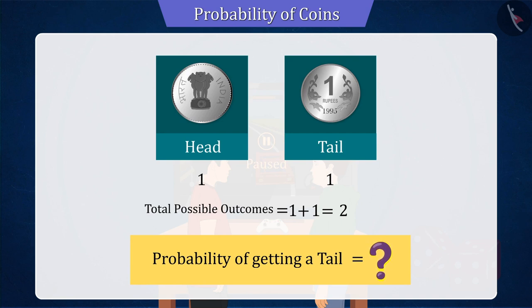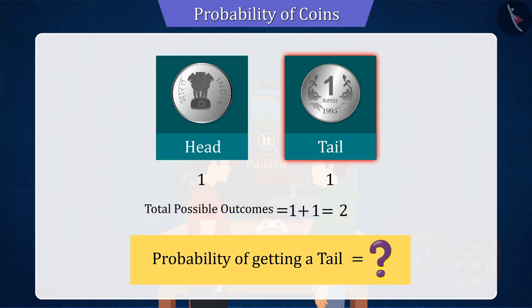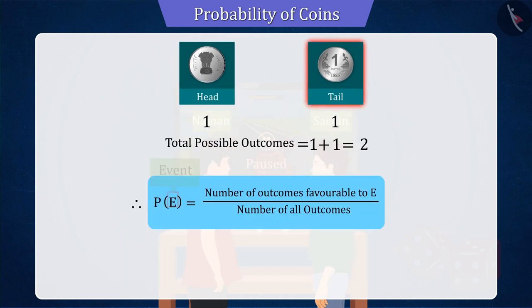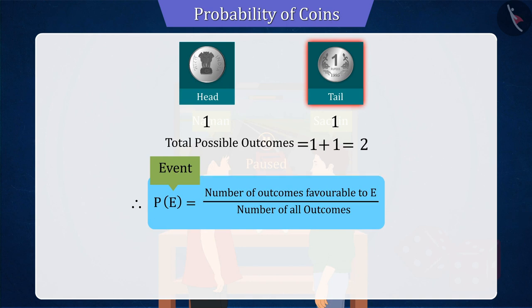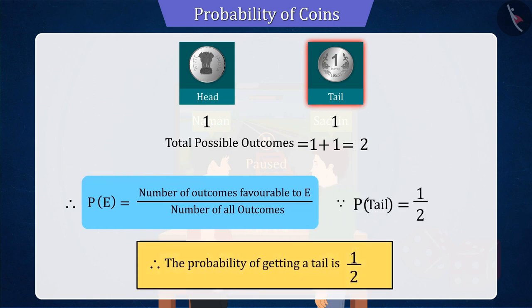As we know that tossing a coin gives two possible results, out of which there is only one possibility of tail. The probability of event E is equal to the number of favourable outcomes of the event upon the number of all possible outcomes. Therefore, we can say that the probability of getting a tail will be 1 by 2.